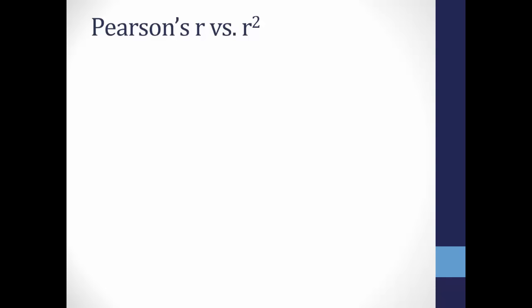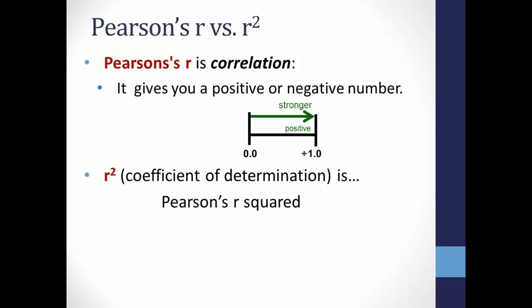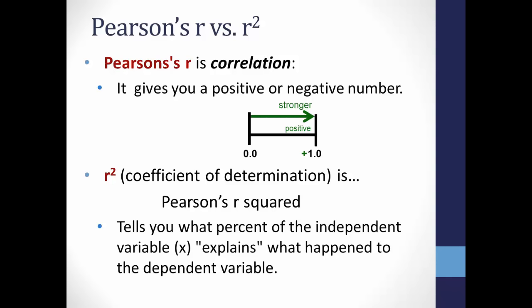You may hear Pearson's R and R-squared — what's the difference? Pearson's R is correlation, telling you the strength of association and whether it is positive or negative. R-squared is simply taking the Pearson's R statistic and squaring it. It will always be a positive number ranging from 0 to 1.0. This tells you what percent of the independent variable — say, hours of studying — explains what happens to the dependent variable, such as exam score.